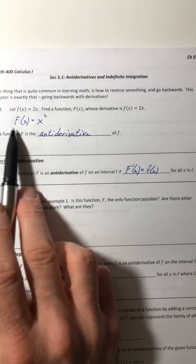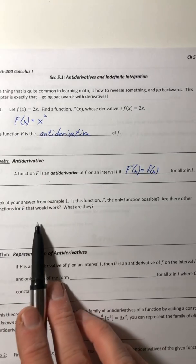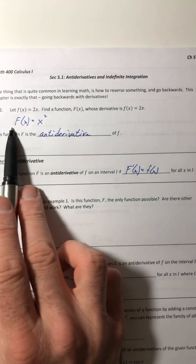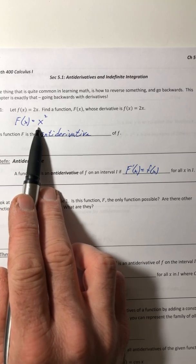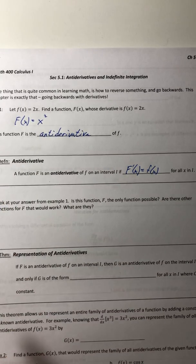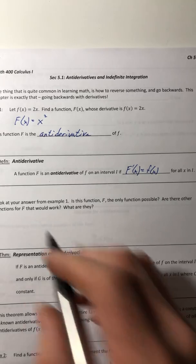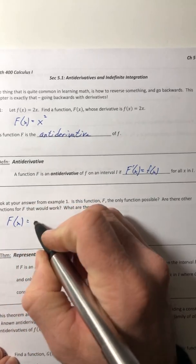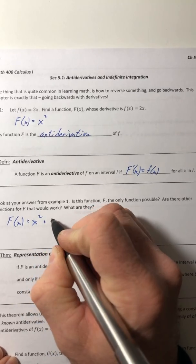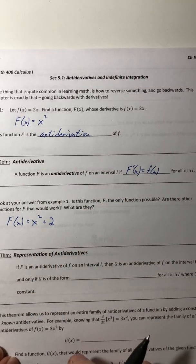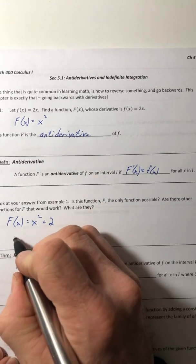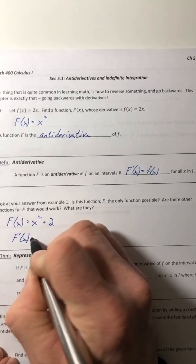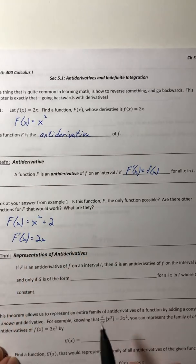Now look at our answer from example one. So is this the only function that we could ever come up with? Well, no, there should be other ones. So let's look at like this one. How about x squared minus 75? That would work because its derivative is also 2x.